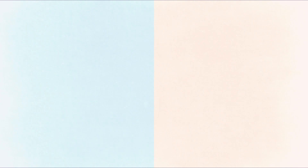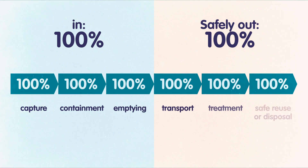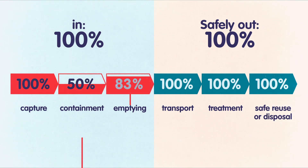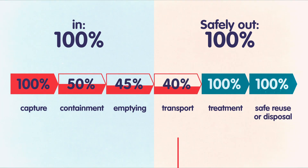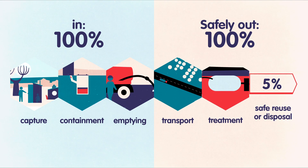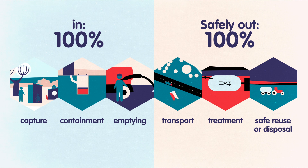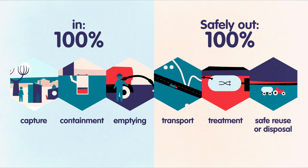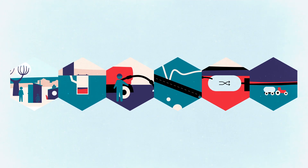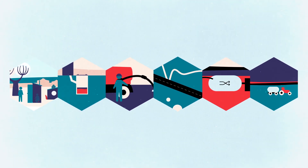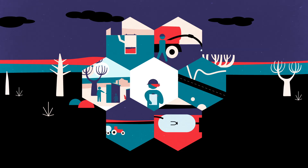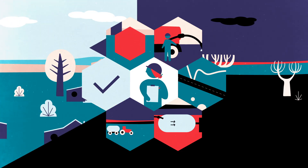For a service to be deemed safely managed, all human waste captured at the beginning must ultimately be safely reused or disposed of at the end of the chain. The principal goal being to keep human faecal waste contained throughout the sanitation chain. Applying a system strengthening approach to the sanitation chain means looking at the chain in its entirety and making sure that each link is present and secure.